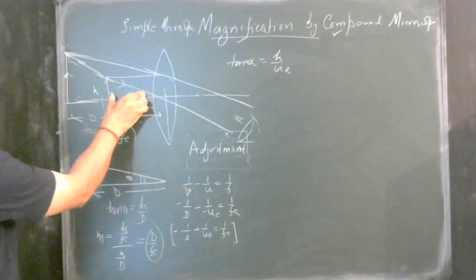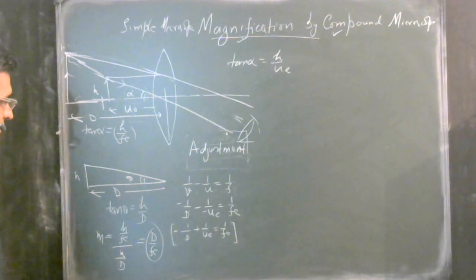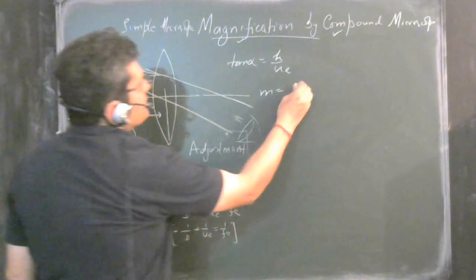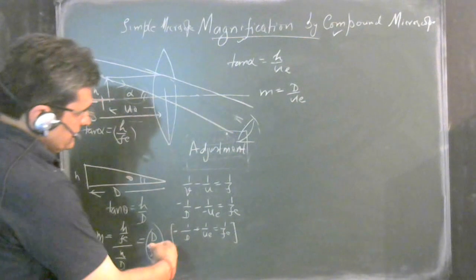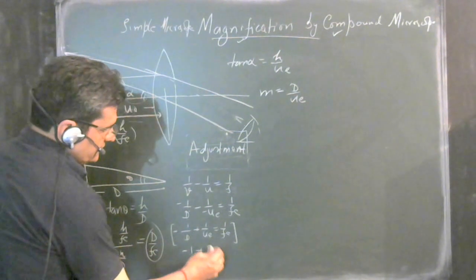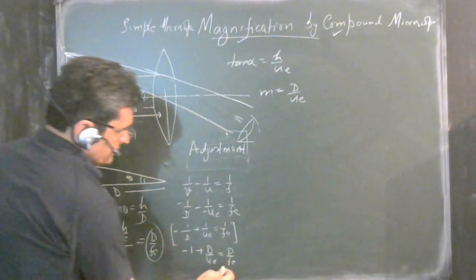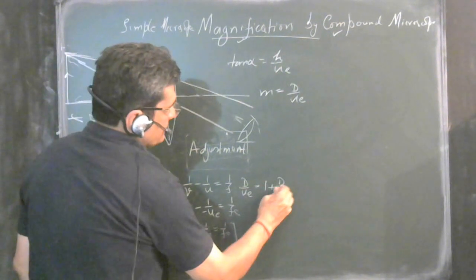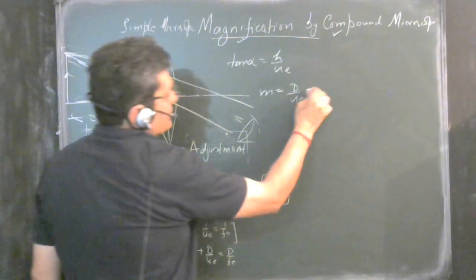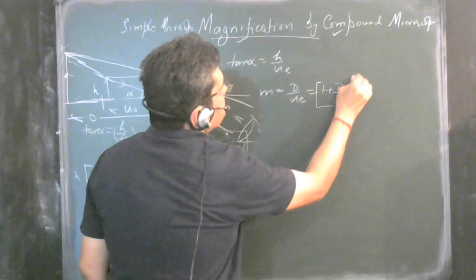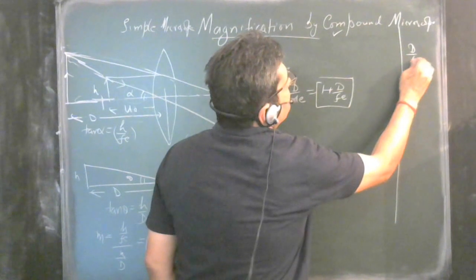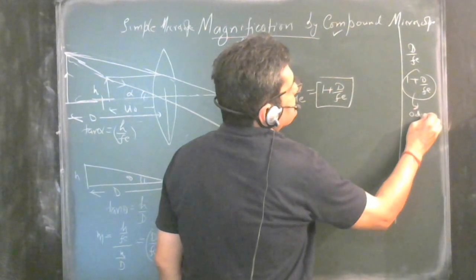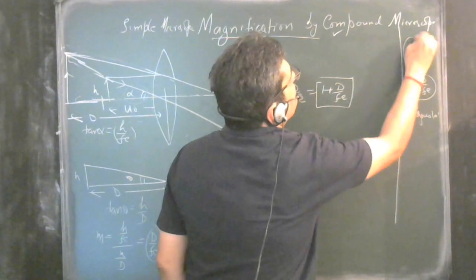Magnification in this adjustment case is D / ue. Multiplying the lens equation by D: −1 + D/ue = D/Fe, so D/ue = 1 + D/Fe. Therefore the magnification becomes 1 + D/Fe.